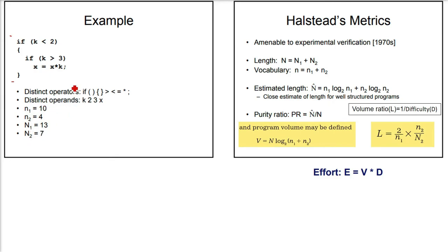First of all, what are the operators? Operators are all symbols or notations provided by the programming language. Let us make a list. if is an operator, round bracket, angle bracket, curly brace, equal to, star for multiplication, semicolon, and braces. Now count them: 1, 2, 3, 4, 5, 6, 7, 8, 9, 10, 11, 12, 13. This is capital N1, the total number of operators.